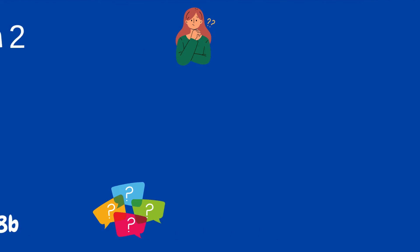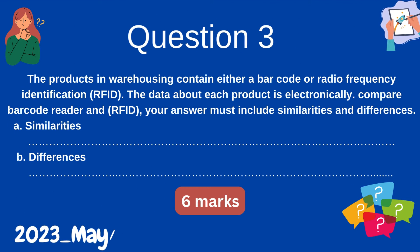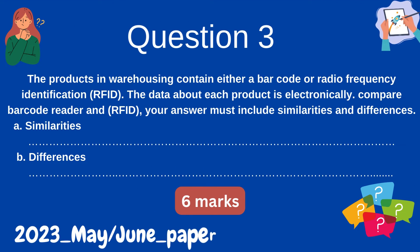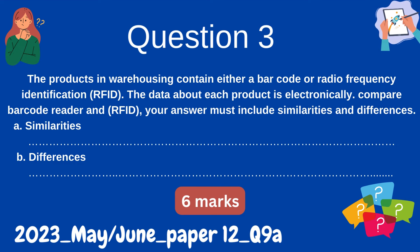Question 3: The products in a warehouse contain either a barcode or radio frequency identification (RFID). The data about each product is stored electronically. Compare barcode reader and RFID. Your answer must include similarities and differences. (3a) Similarities. (3b) Differences.